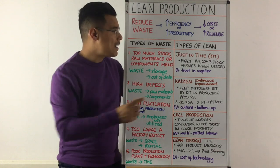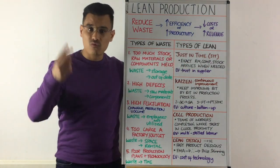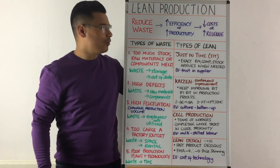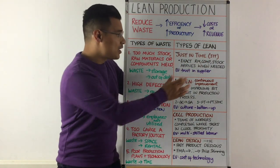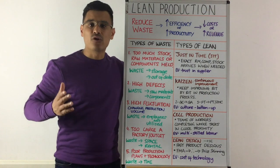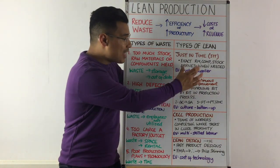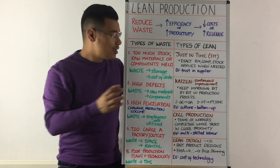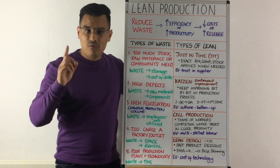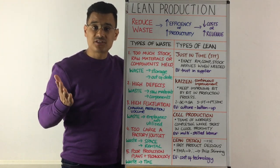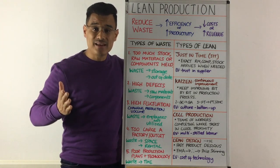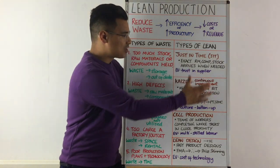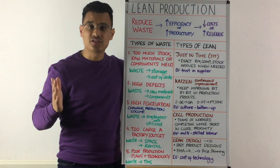Now let's think of the four main types of lean production, of which the first two are the most important. The very one that's most important is Just in Time, or JIT, and that's about having the exact amount of raw materials, components, and stock arrive exactly when you need it and in the exact amount.